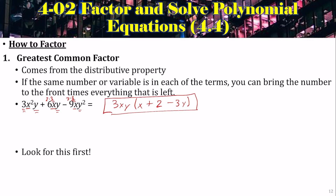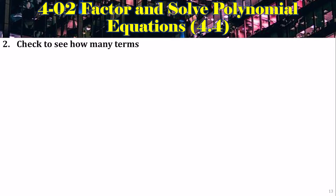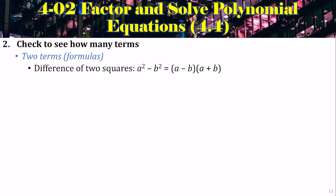Look for the greatest common factor first — always check for it first. Step 2: count the number of terms. If there are two terms, you're going to use formulas. You have a difference of squares: a² minus b² equals (a − b)(a + b). Such as 9x² minus y⁴, that's the same as (3x)² minus (y²)², so a is 3x and b is y², giving (a − b)(a + b).